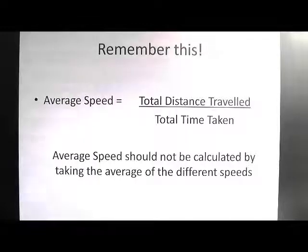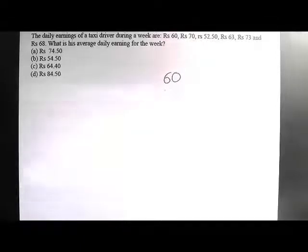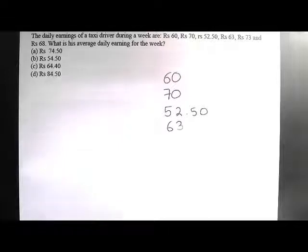Let's look at some examples. The first question says: the daily earnings of a taxi driver during a week are 60, 70, 52.5, 63, 73, and 68. What is the average daily earning for the week? This is simply a case of finding the simple average, so we add up all these values: 60 + 70 + 52.5 + 63 + 73 + 68.